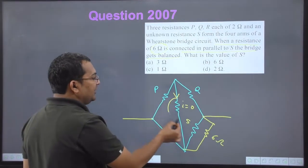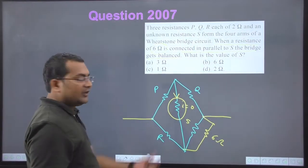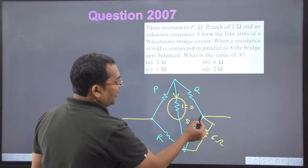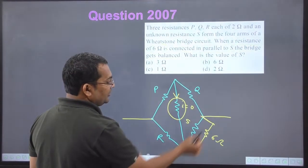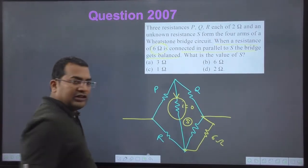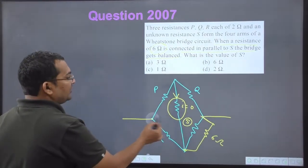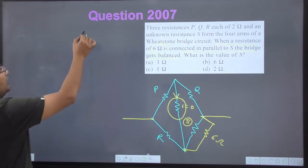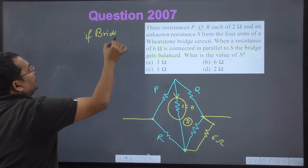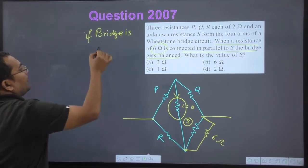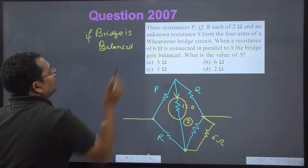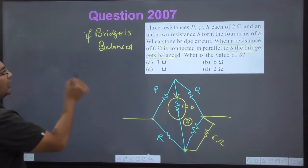The galvanometer branch is now useless — bridge is balanced, so no current flows through it. If I connect the 6 ohm resistance in parallel to S, what is the value of S — what will be the value of this unknown? Now, if the bridge is balanced, let's apply the balance condition.